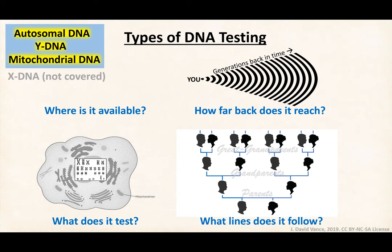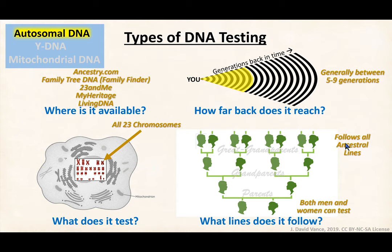I'll start with a one-chart picture of each of the kinds of DNA testing available today. I'll cover autosomal DNA, Y-DNA, and mitochondrial DNA. I'm not going to talk too much about X-DNA here — the inheritance patterns are rather difficult and it's a specialty item. We'll talk about where it's available, what companies give it, how far back it reaches, what the cell components it tests are, and the ancestral lines each kind of DNA testing follows.